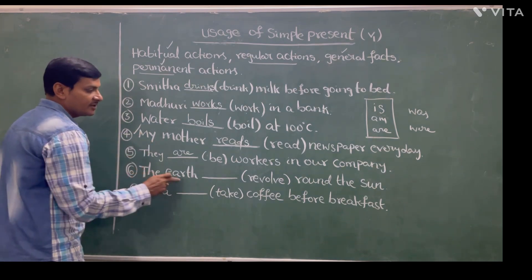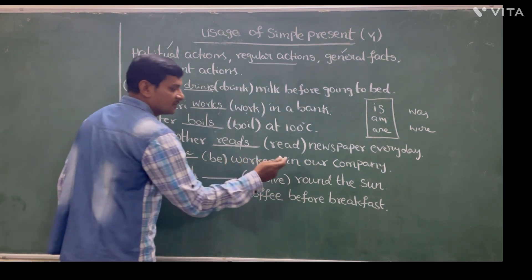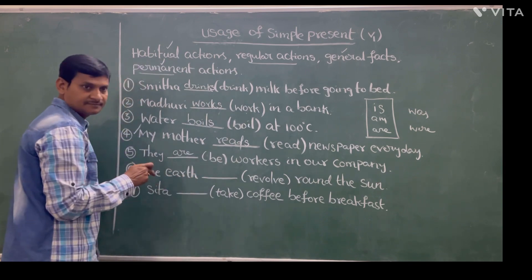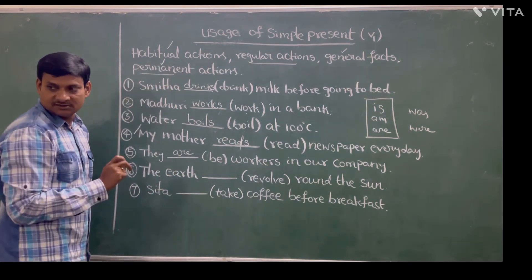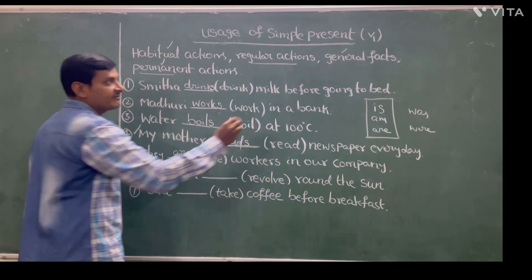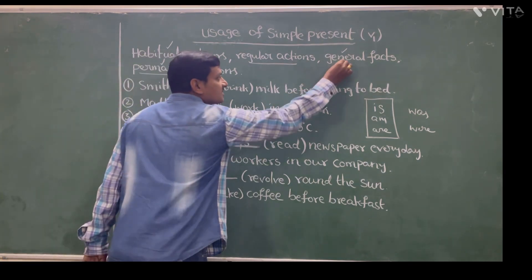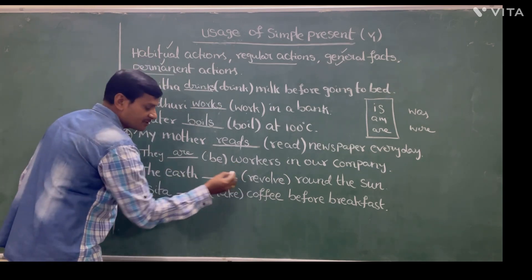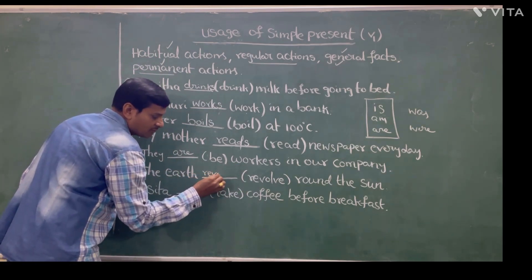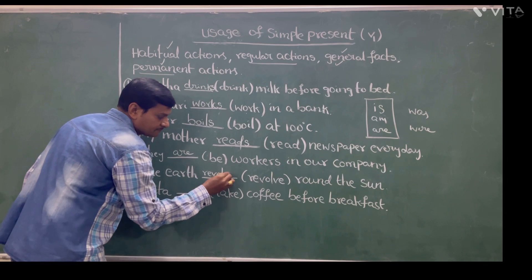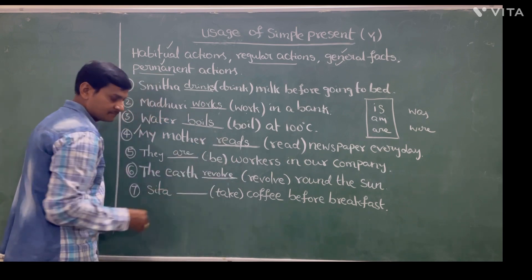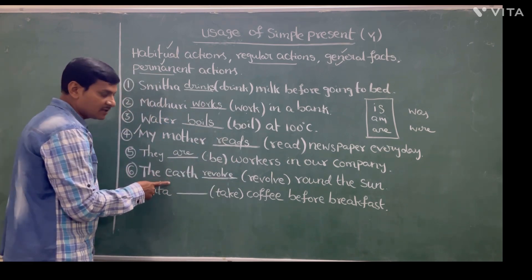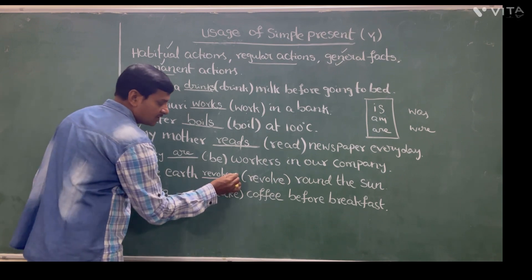Next: The Earth ___ revolve round the sun. What is it? General fact. That is a general fact. So 'revolve' is simple present. The subject pronoun of the Earth is 'it' — third person singular — so we add 's'. The Earth revolves round the sun.